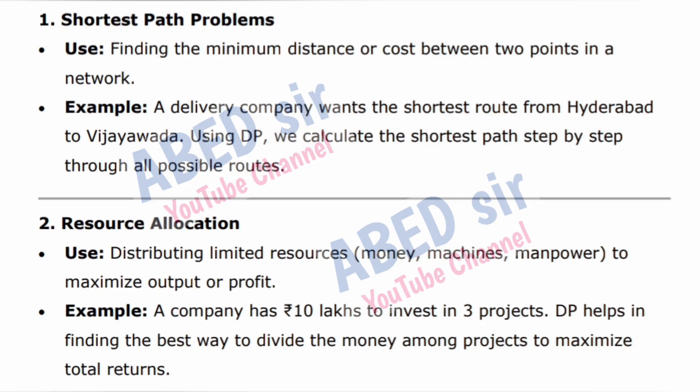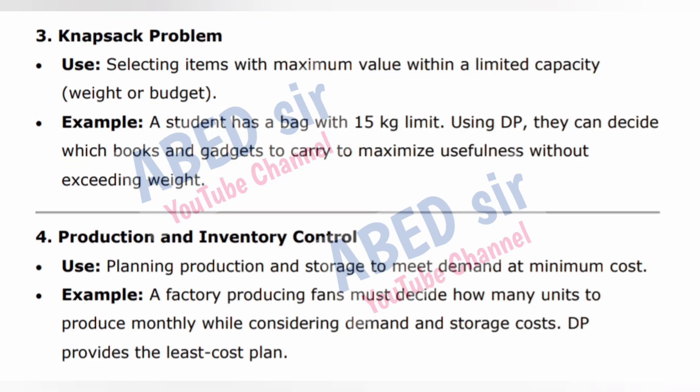2. Resource allocation — distributing limited resources (money, machines, manpower) to maximize output or profit. Example: A company has 10 lakhs rupees to invest in three projects. DP helps in finding the best way to divide the money among projects to maximize total returns. 3. Knapsack problem — selecting items with maximum value within a limited capacity, weight, or budget. Example: A student has a bag with a 15 kg limit. Using DP, they can decide which books and gadgets to carry to maximize usefulness without exceeding weight.